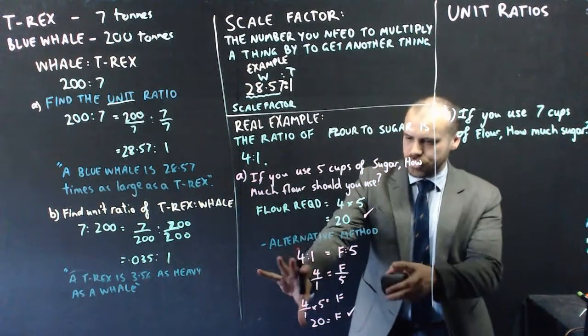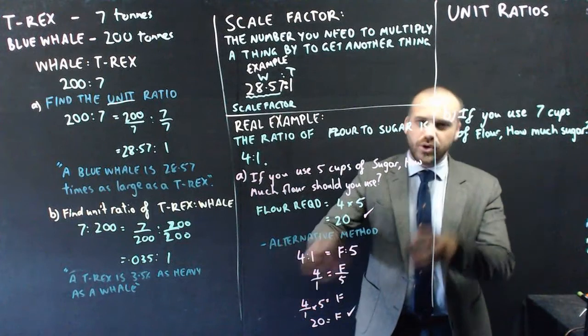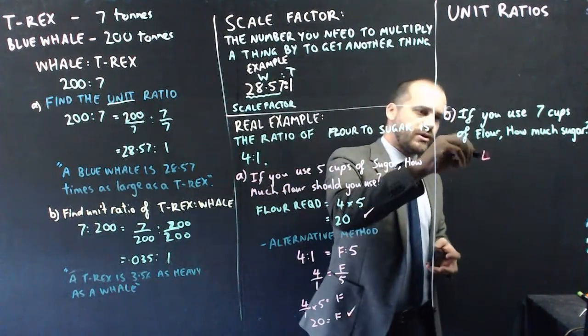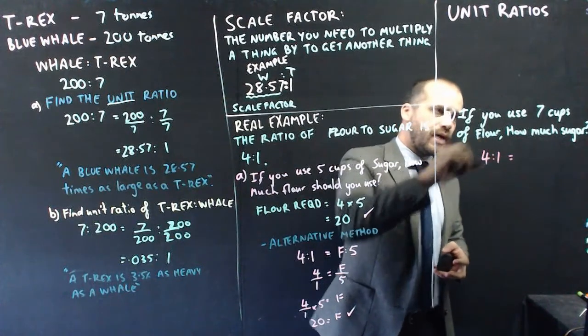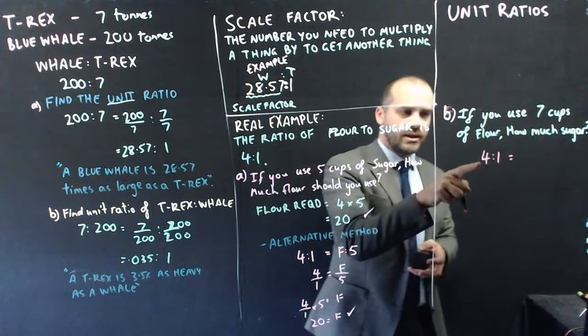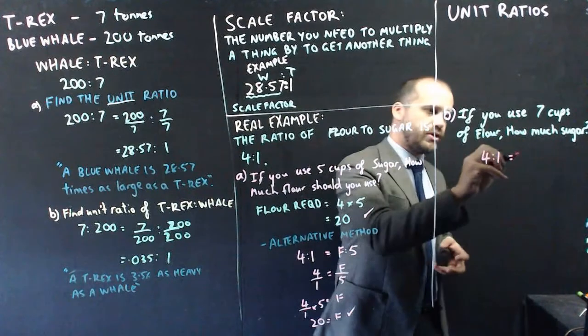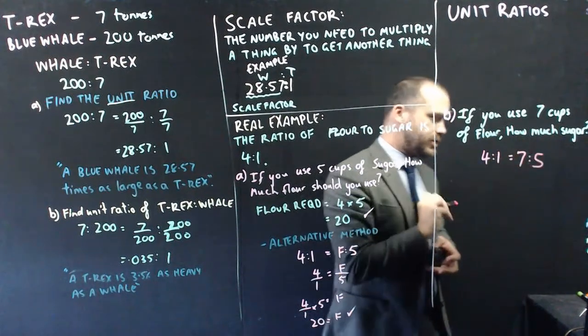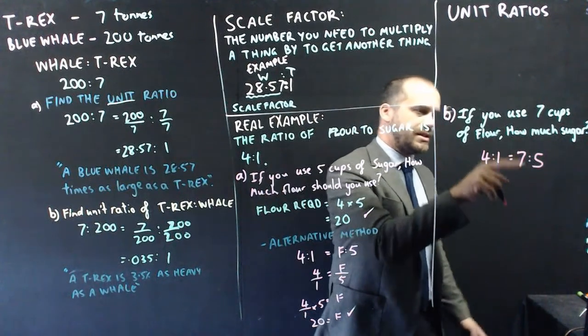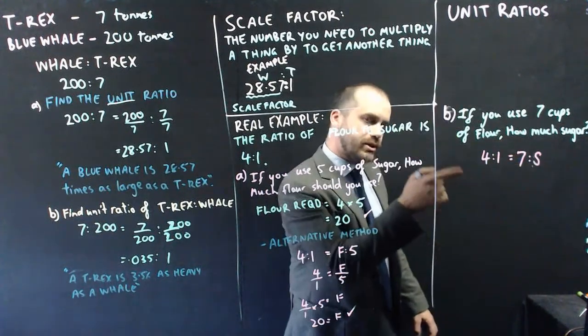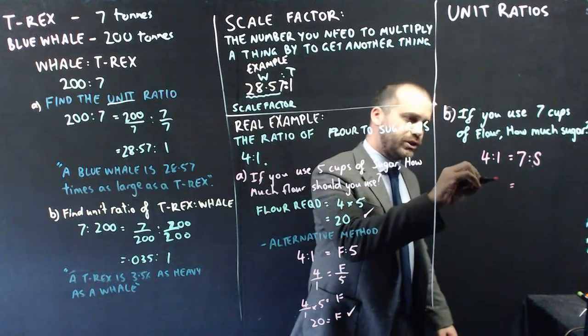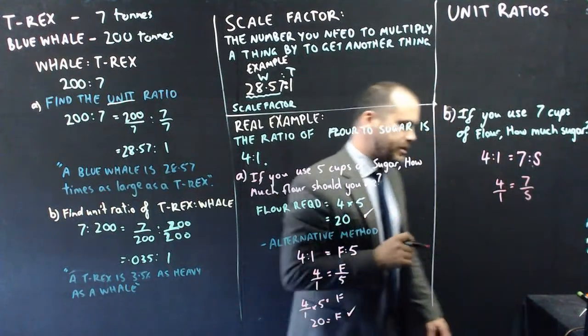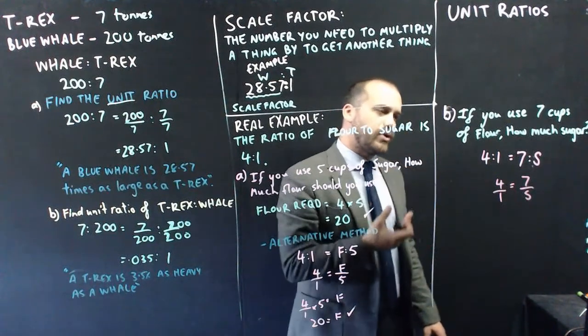We're going to use our alternative method here because it works really nicely for this. So, we know that the ratio is 4 is to 1. And we know that we're going to use 7 cups of flour, which is our first number. The thing we don't know is how much sugar we're going to use. So, 4 is to 1 is equal to 7 is to S. Now, this gets a lot easier if we write it as a fraction. 4 over 1 equals 7 over S. But we do need to do a little bit of work here.